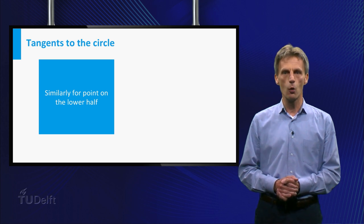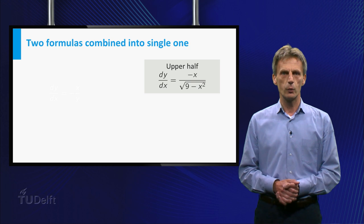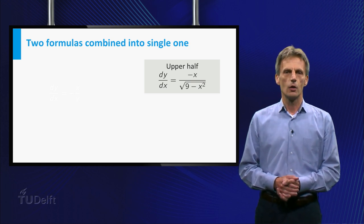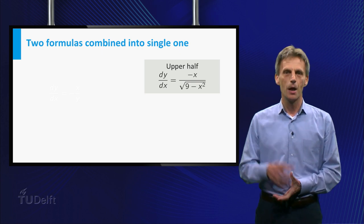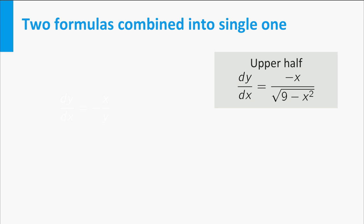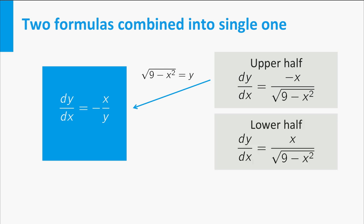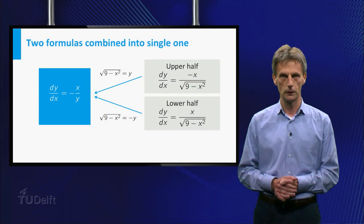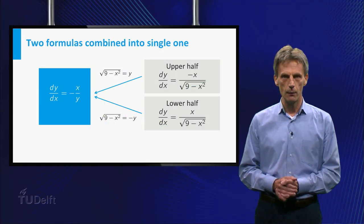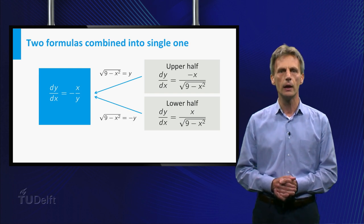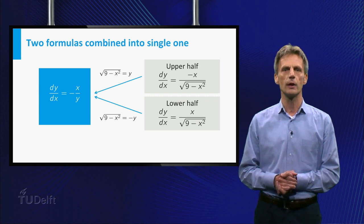We can do the same for points on the lower half of the circle. It appears we can compute the slopes of the tangent to the circle in the usual way. Pay attention now: since the square root of 9 minus x squared is equal to y for points on the upper half, the derivative for those points can be written as minus x divided by y. This formula holds as well for points on the lower half, because there the square root of 9 minus x squared is equal to minus y. So we have a single formula for the derivative, dy/dx equals minus x divided by y, which is valid for all points on the circle. You are going to learn a new technique that will enable you to find this formula without actually determining explicit formulas for the functions first.